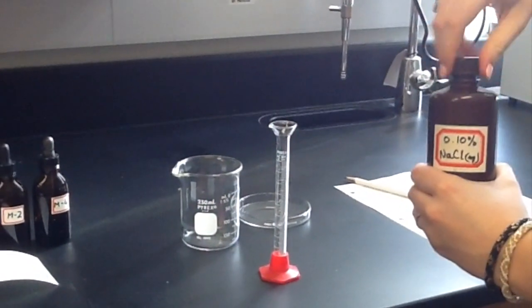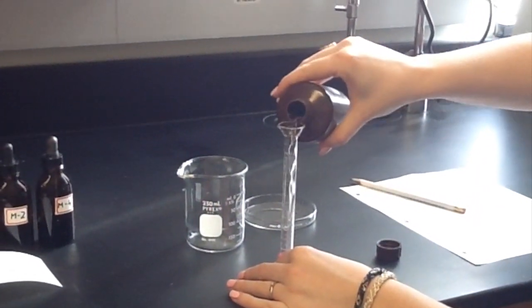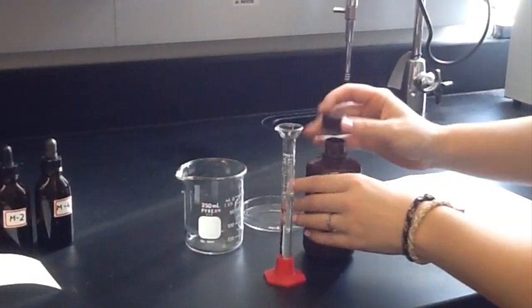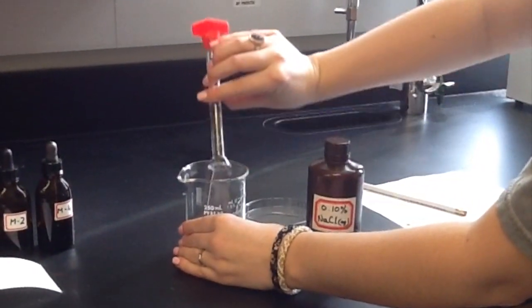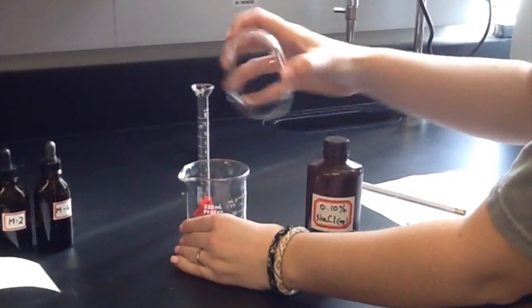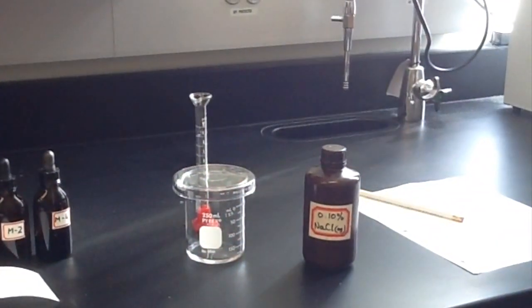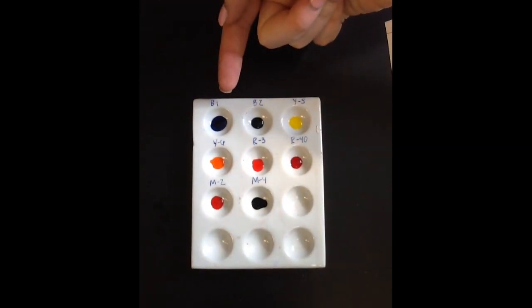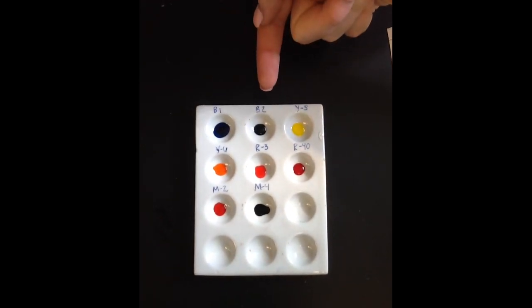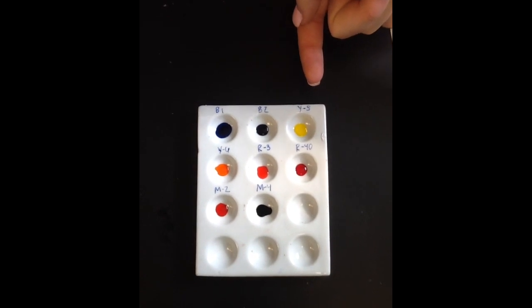Using a 10 ml graduated cylinder, measure 7 ml of your solvent and carefully transfer to a 250 ml beaker. Cover the beaker with a petri dish. Using a spot tray, label each well with the specific dye and transfer a drop of each dye into the corresponding well.